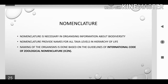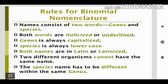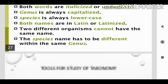Nomenclature — naming the organism based on the guidelines of the International Code of Zoological Nomenclature. Binomial nomenclature was first introduced by Carolus Linnaeus. It is a system of naming species composed of two components: generic name and species name. Rules: the name consists of genus and species name; words are italicized; genus is capitalized; species is lowercase; and names are Latinized.